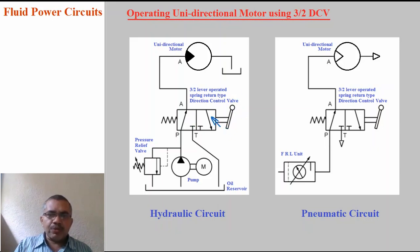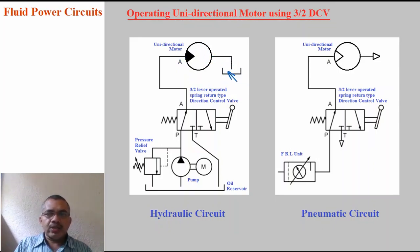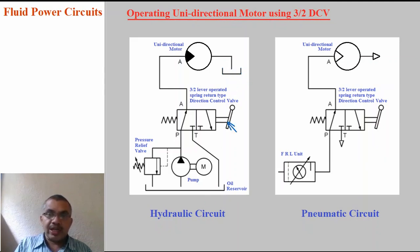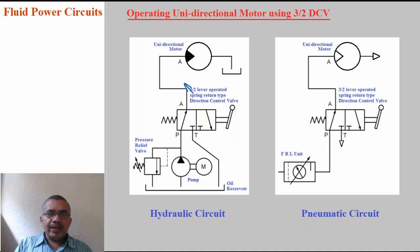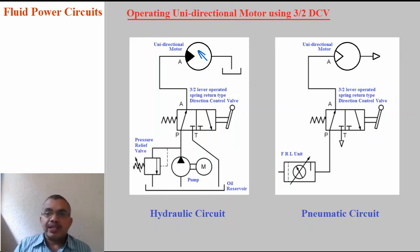When the lever is in the first position, P to A connection is made — oil flows to the unidirectional motor, which runs in one direction. Oil from the motor goes back to the reservoir tank. Note: in circuit diagrams only one reservoir tank exists physically; the symbol is shown wherever required. When I shift the lever to the second position, A to T connection is made and P is closed, so oil cannot flow to the motor — the motor stops. It will not run in the opposite direction. Unidirectional motor can run in only one direction. The same applies in the pneumatic circuit — compressed air flows to the motor in one position, and the motor stops in the other.